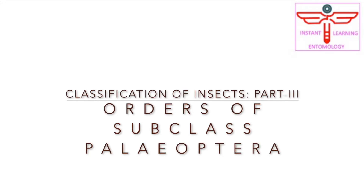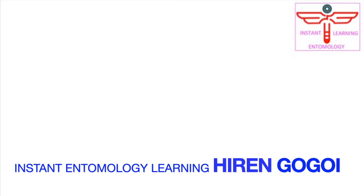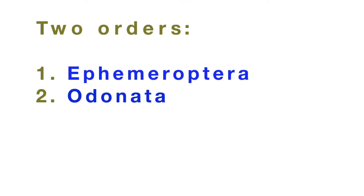Instant entomology learning: classification of insects, part 3 — orders of subclass Paleoptera. Contributed by Hiren Gogoi, Rajiv Gandhi University, Arunachal Pradesh. The subclass Paleoptera is classified into two orders: Ephemeroptera and Odonata.